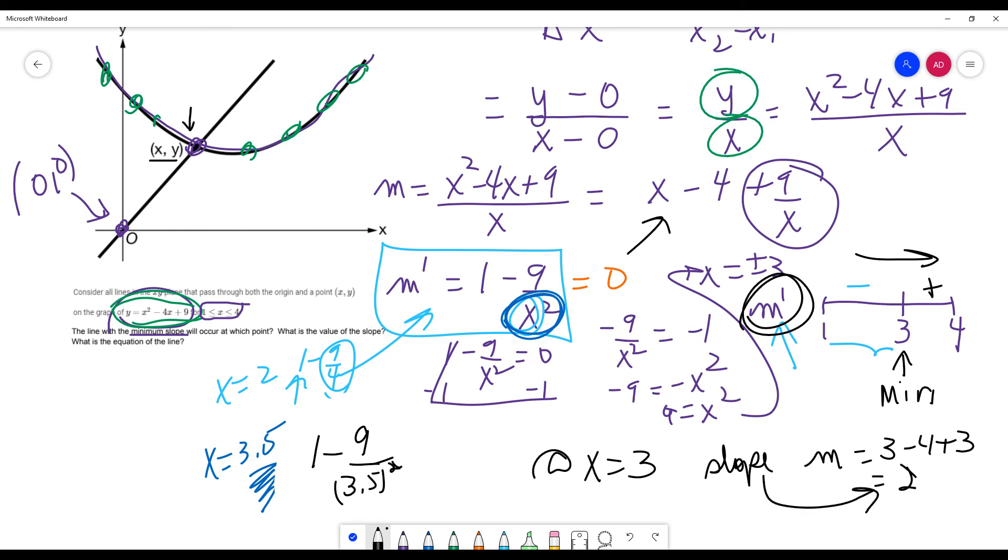Now the point, now check this out. x equal to 3, but if I actually wanted the y value, then I would actually have to plug it into the actual equation of the curve, because if I was trying to find the actual point, which it did ask, by the way. What is the point? So I would need to find the y.